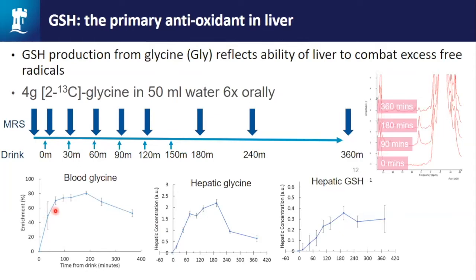We're also using carbon-13 labeled studies to look at antioxidants in the liver, which link with ATP recovery and liver function. We give carbon-13 labeled glycine and do a very simple pulse-acquire sequence over the liver — just a coil over the liver to collect all available signal in an FID. We create spectra and look at glycine appearing over time and how it's converted to glutathione. We can see glutathione creation over time. We've just finished this study and hopefully we're about to publish, using a paracetamol challenge.